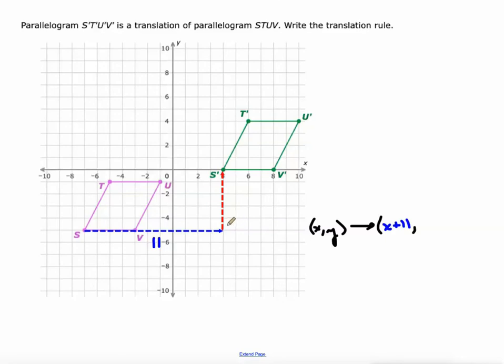And then how far up did we go? We started at negative five, we ended up at zero. So we went up five units. So that's Y plus five. And that's our rule.